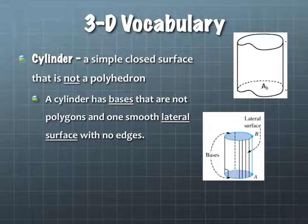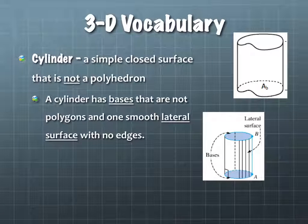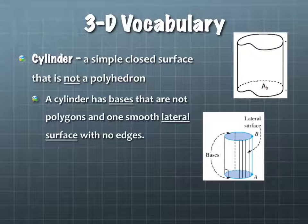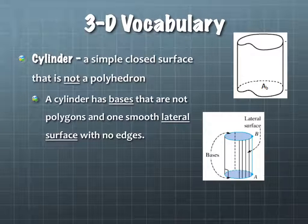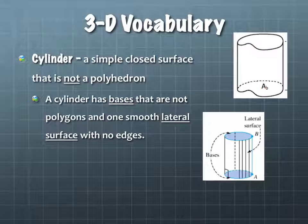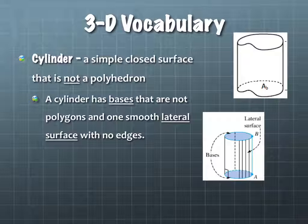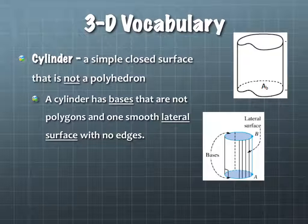A cylinder has bases that are not polygons, with one smooth lateral surface with no edges. You all know lots of shapes like this — most of them are circular cylinders. Examples: a can, a cup, a bucket, a paper towel roll, a trash can, water bottles, a biscuit can, a rolling pin, a toilet paper roll. Lots of examples of cylinders.